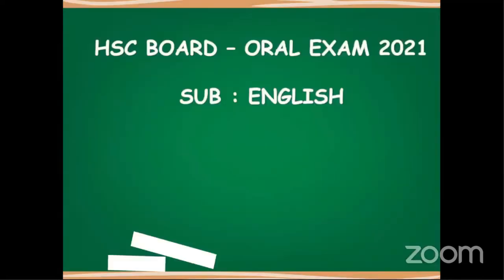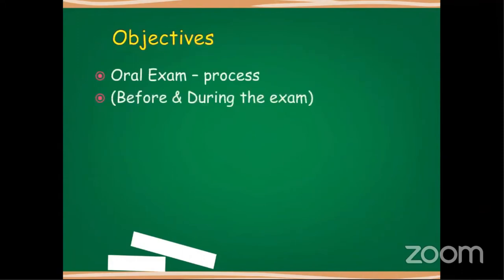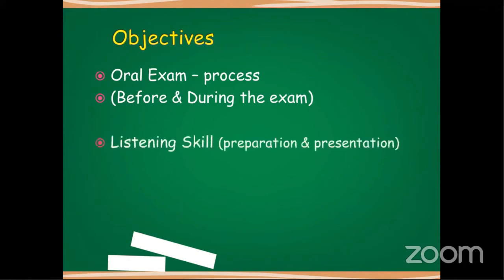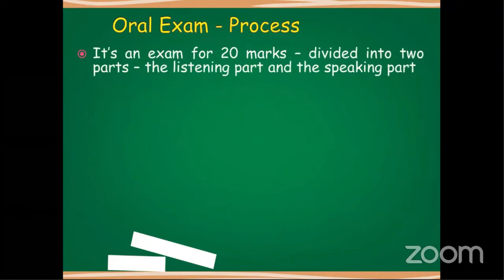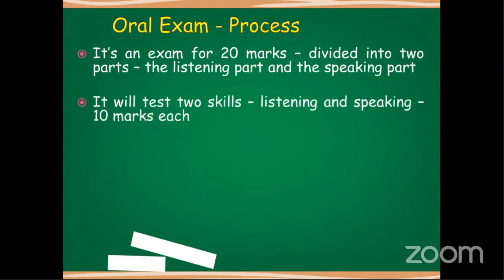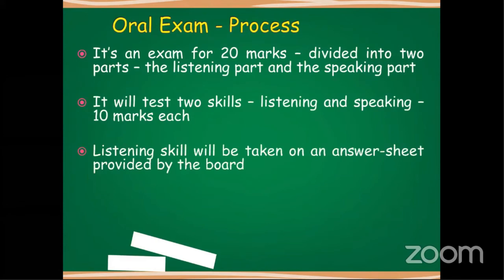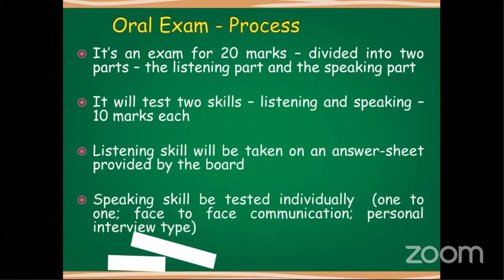The oral examination is for 20 marks. The objective of the oral process — what to do before and during the exam — should be understood properly. We have just two skills: listening skill and speaking skills for the oral examination, 10 marks each. Both the preparation and presentation should be understood. The exam is for 20 marks divided into two parts: listening part and speaking part, 10 marks each. Listening skill will be taken on the answer sheet provided by the board, and the speaking skill is an individual test — a face-to-face communication where some questions will be asked.